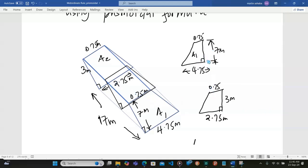We can see the cross-sections have been given here. A1, the bigger one, is 4.75 meters at the base, 0.75 on top, 7 meters deep. The other end is 3 meters deep, 2.75 meters at the base, 0.75 meters at the top. So, let's proceed.